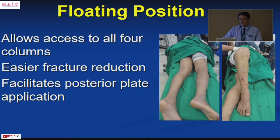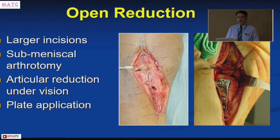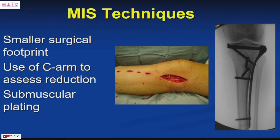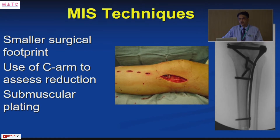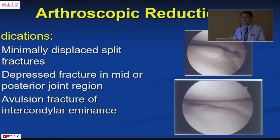Reduction techniques have also improved. From older open reduction with large incisions, submeniscal arthrotomies, and direct visual confirmation, we are now moving to minimally invasive techniques where smaller windows are used to reduce the articular surface. Because direct visualization is limited, you rely mainly on fluoroscopy — but fluoroscopy can give a false impression of reduction, especially when the articular depression is in the posterior half of the tibia.